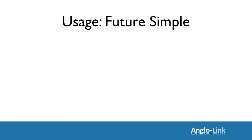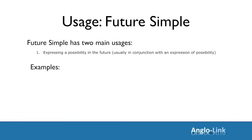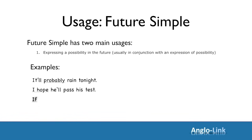Let's move on to usage now. Future simple has two main usages. The first one is to express a possibility in the future. In this case, we usually put in an expression of possibility in our sentence — expressions such as I hope, I think, maybe, probably. Let's look at some examples: It'll probably rain tonight. I hope he'll pass his test. If we don't hurry, we'll miss our flight.